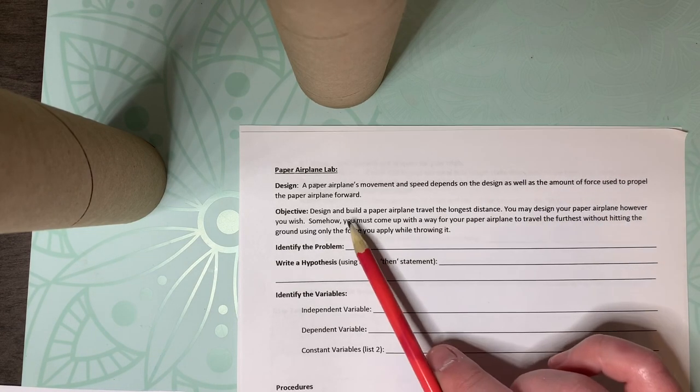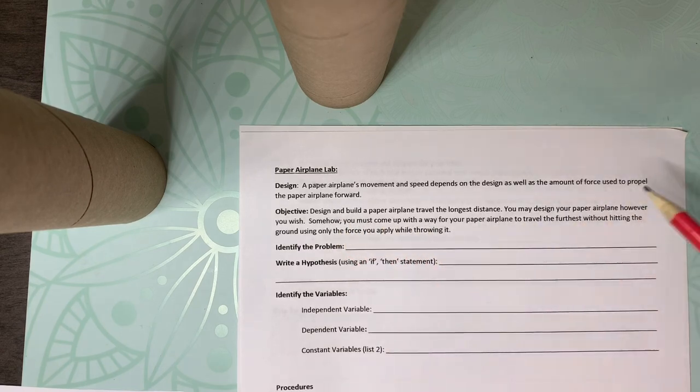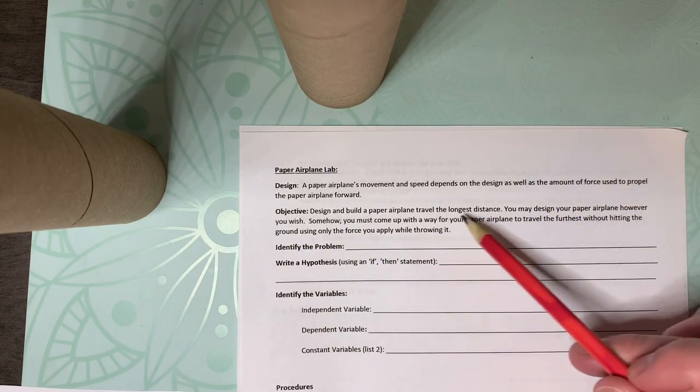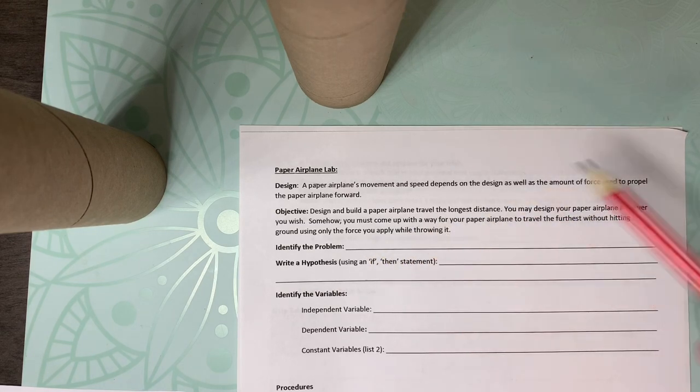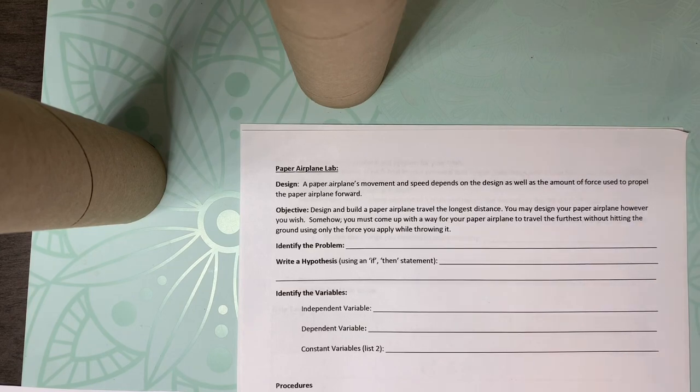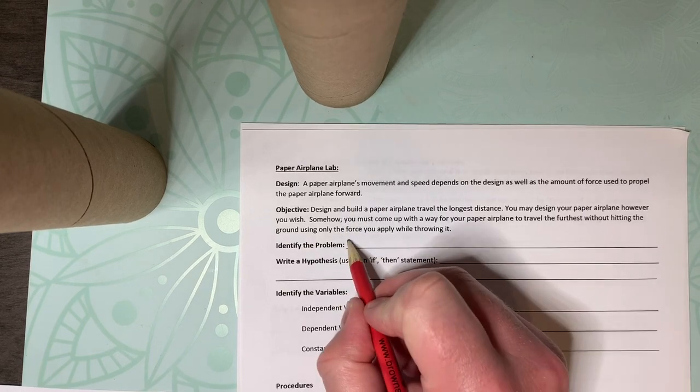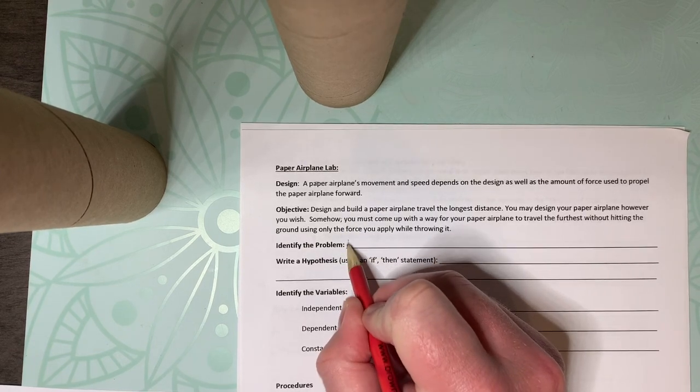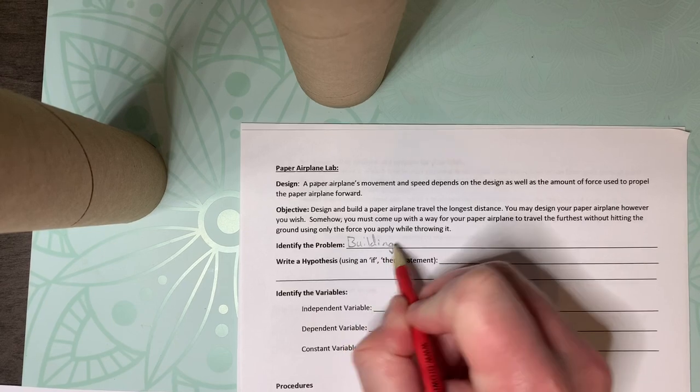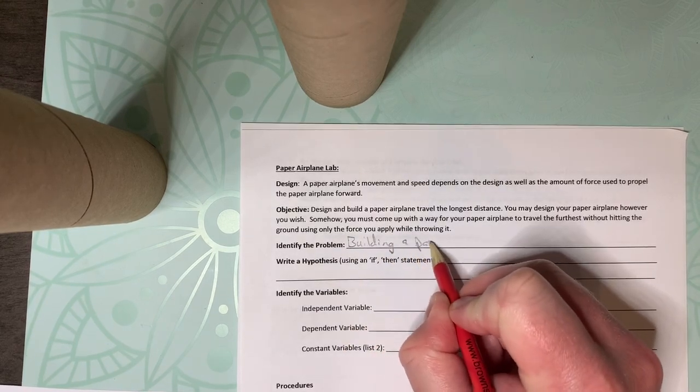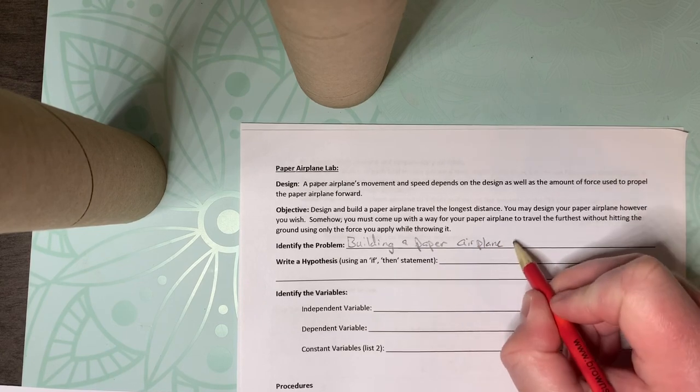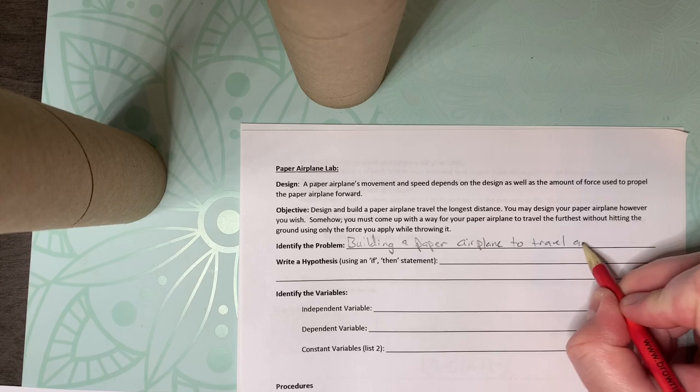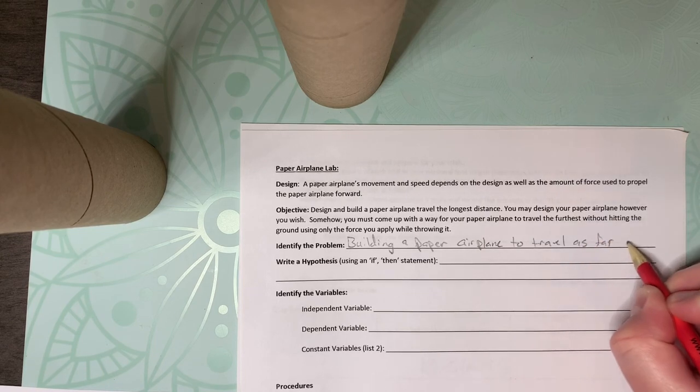So we're going to go over those. Your objective for this is design and build a paper airplane that travels the longest distance. You may design your paper airplane however you wish. Somehow you must come up with a way for your paper airplane to travel the furthest without hitting the ground. So your problem is that you are building a paper airplane to travel as far as possible.